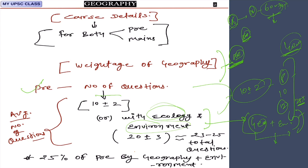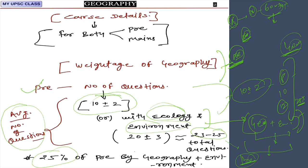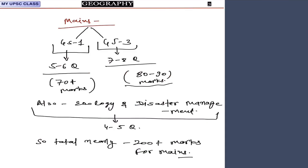If you mix geography with ecology and environment, those two subjects together cover 25 percent of your prelims as well as mains syllabus. Listen carefully: when you read ecology, environment, and geography, 25 percent of your work is done for both prelims and mains. Combining geography and environment, the average number of questions in pre-exam is 23 to 25 out of 100.